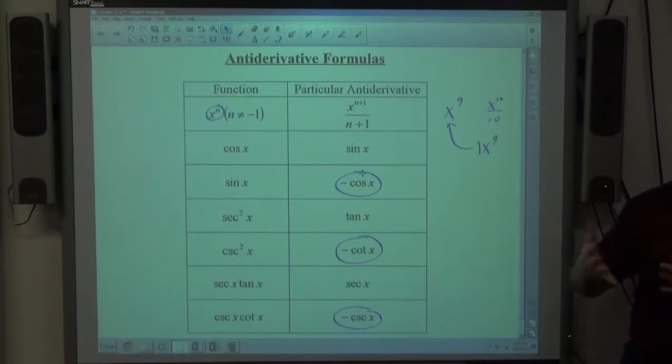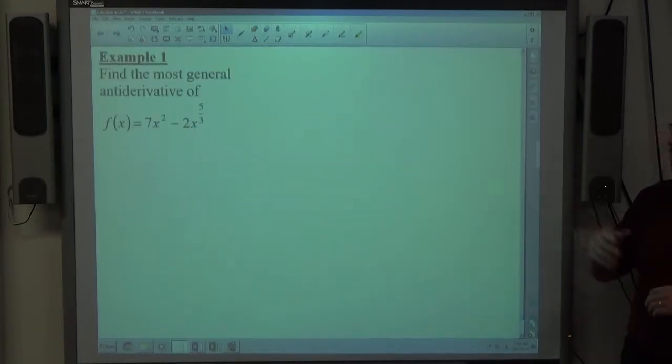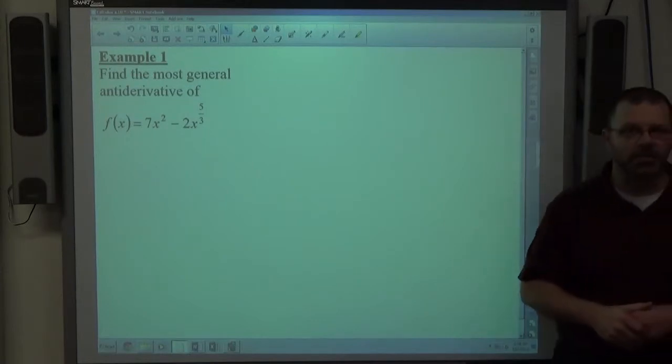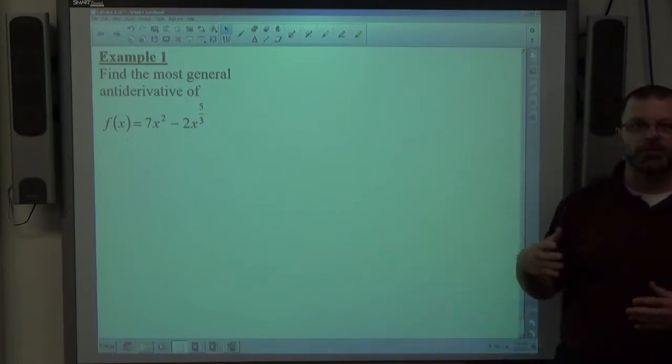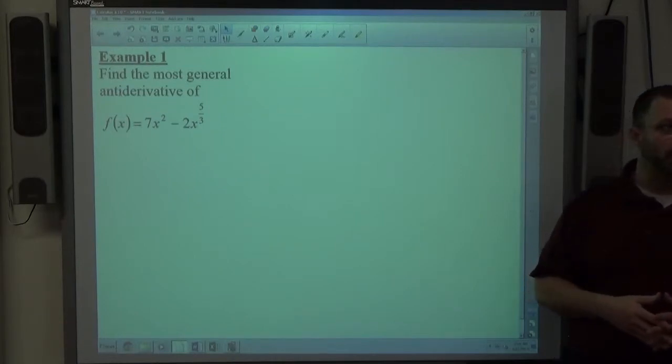So more comes from just a recognition of structure, and as far as how to do them. Let's take a look at example one here. This is going to be our favorite structure for anti-derivatives, it's going to be a polynomial structure. If you have a polynomial structure, you simply have to raise the power by one, divide by the new power.